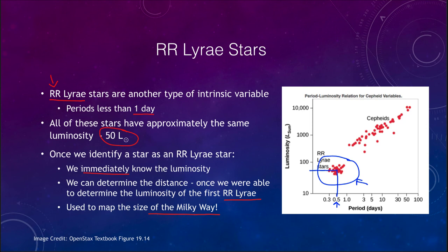RR Lyrae stars have been used to map the size of the Milky Way. They are very common stars in globular clusters, and we can use those to map out the extent of our Milky Way. So these are two ways to determine distances using variable stars — RR Lyrae stars and Cepheid variables — allowing us to map distances not only within our galaxy but also to other nearby galaxies. However, we are going to need more methods, as these are not visible across the universe. When we think of things hundreds of millions or billions of light years away, even Cepheid and RR Lyrae stars won't be bright enough to be seen across those immense distances.